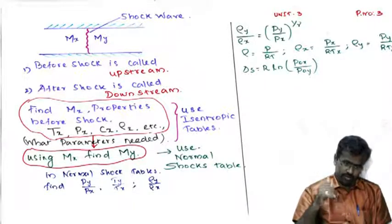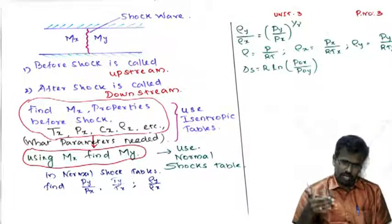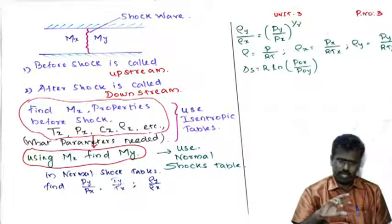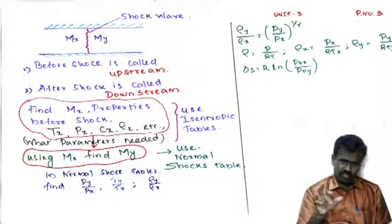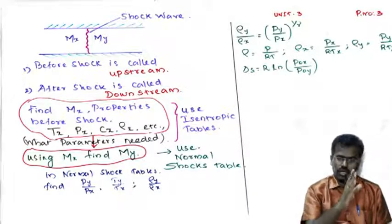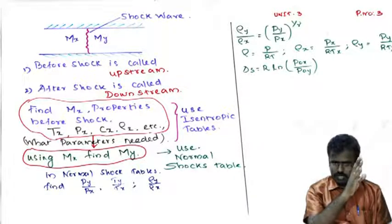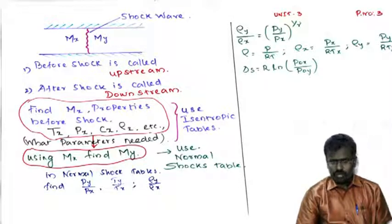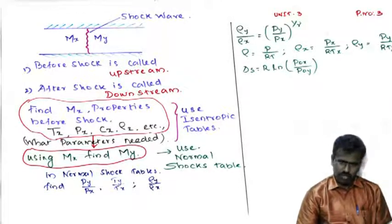Find the respective my, then find the ratios py/px, ty/tx, and ρy/ρx. From the first step we have px, cx, and ρx. Now substitute those values to get py, ty, and ρy. These are the steps to find the after-shock data: my, py, cy, ty — all these values.